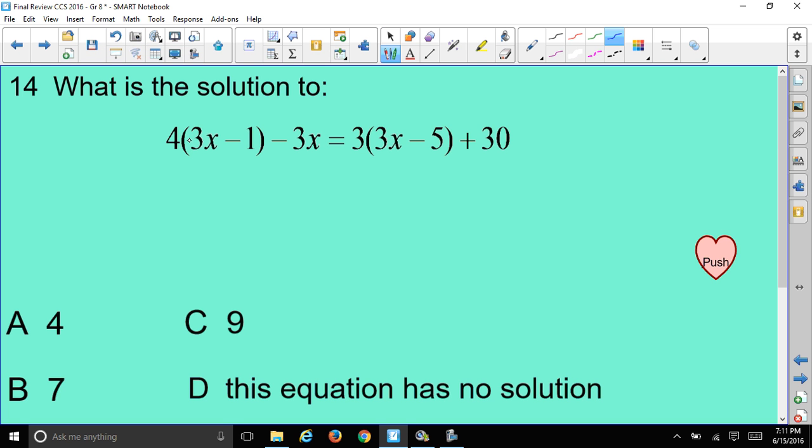So we've got to distribute on this side, 4 times 3x, that'll give you 12x. And 4 times minus 1 will give you minus 4. And bring this down, that gives you minus 3x on this side. And now let's go to this side, do our distribution. 3 times 3x gives you 9x. 3 times minus 5 will give you minus 15. And we have to bring this down, the plus 30.